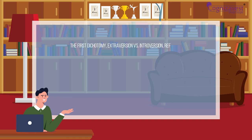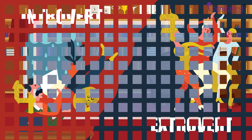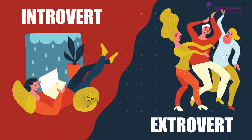The first dichotomy, extroversion versus introversion, refers to how we prefer to direct our energy. Extroverts prefer to be around other people and tend to be outgoing and sociable, while introverts prefer to spend time alone and tend to be more reserved.